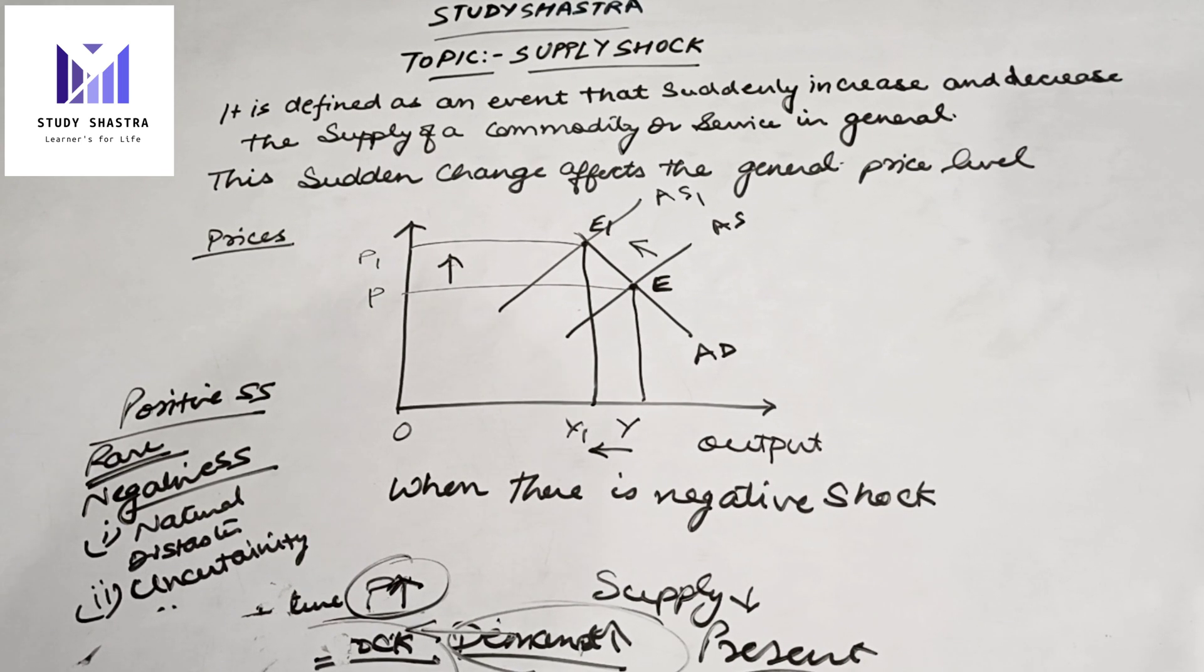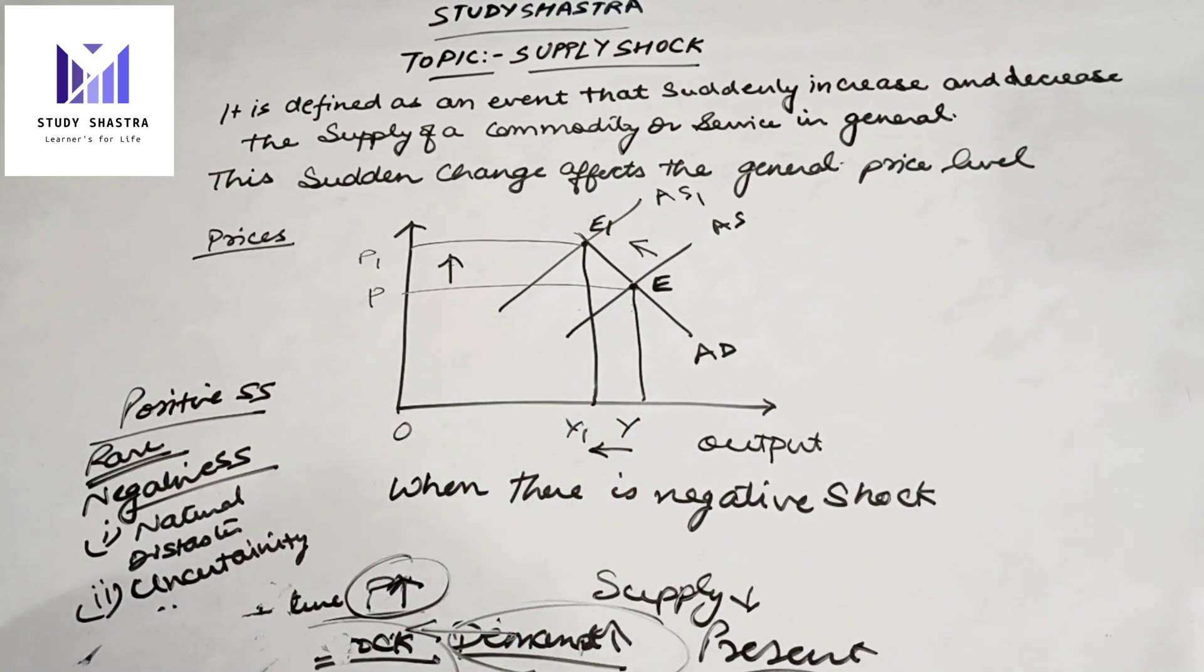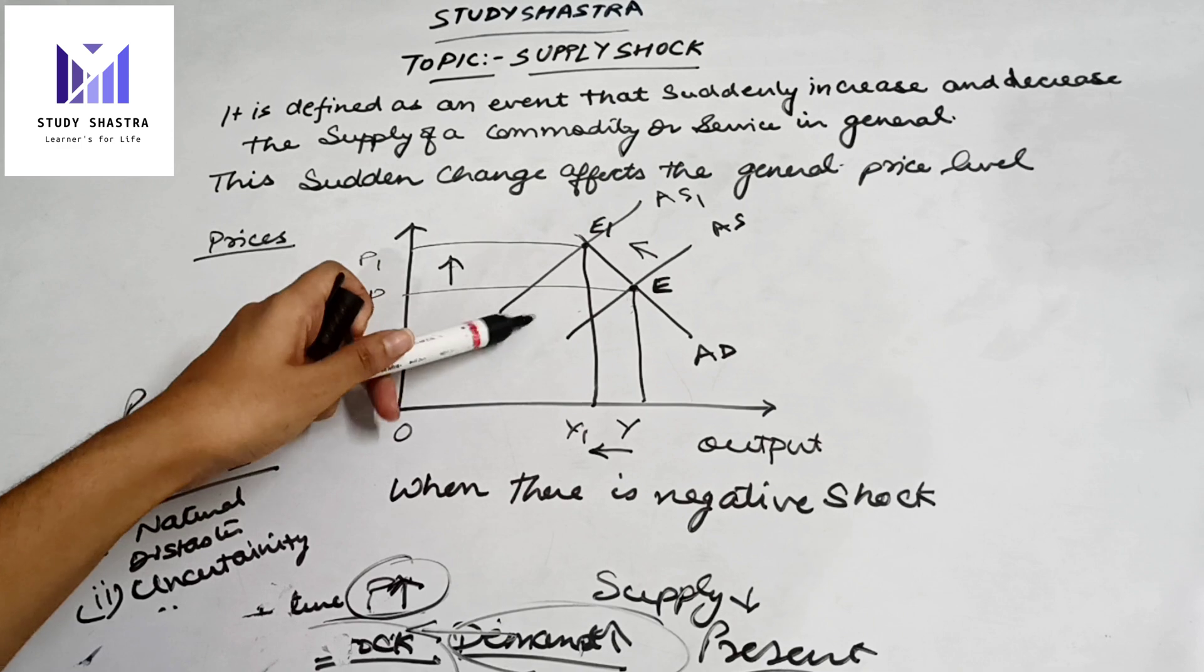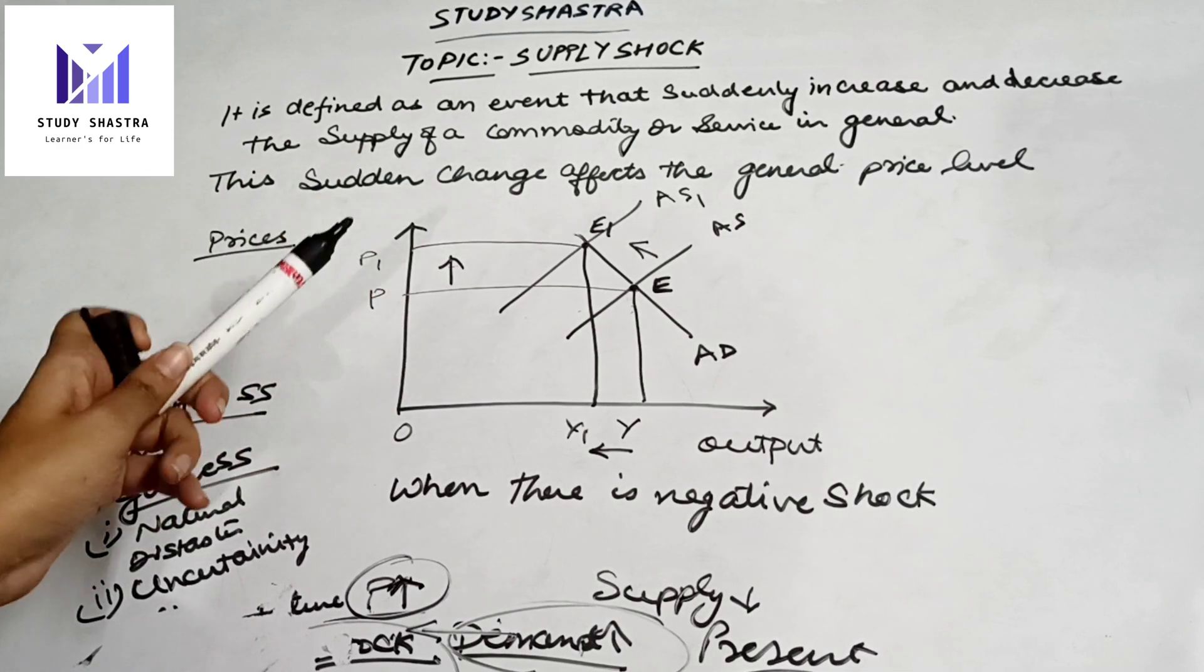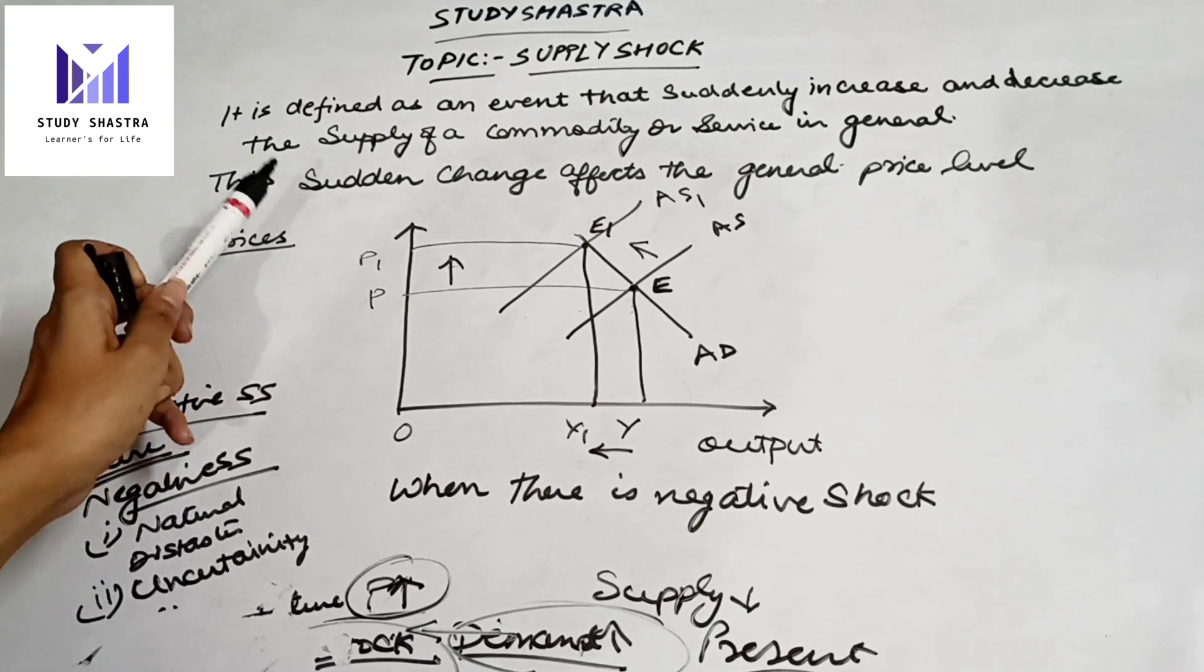Now, when a negative shock occurs in the market, we know that equilibrium is achieved in the economy when aggregate demand equals aggregate supply. But as supply immediately falls, the price level also rises.